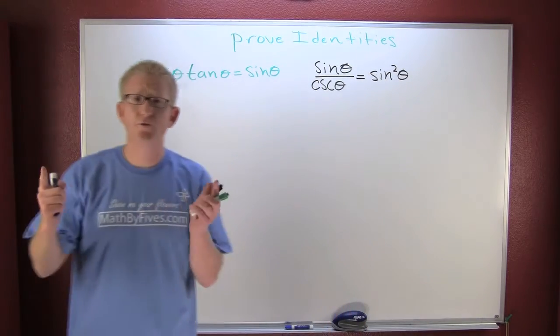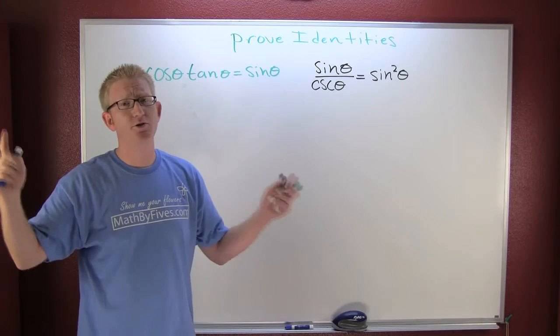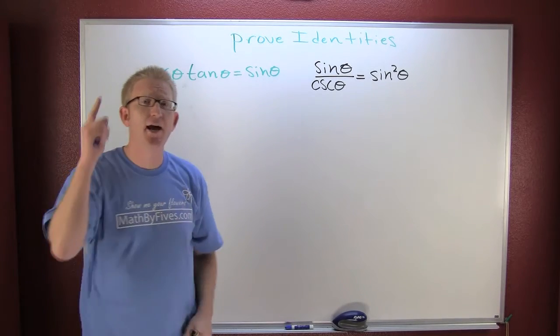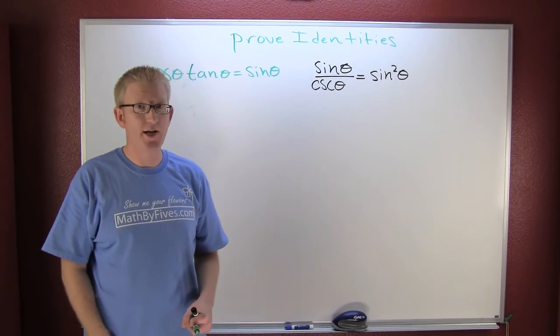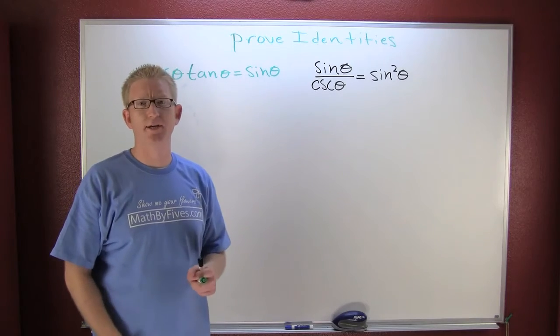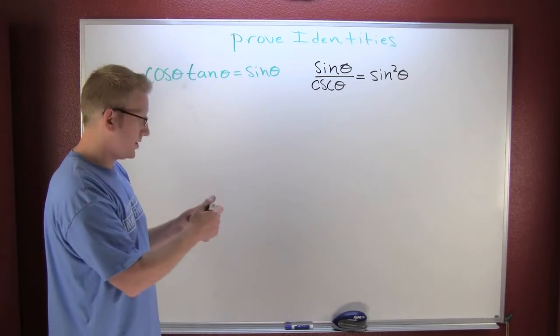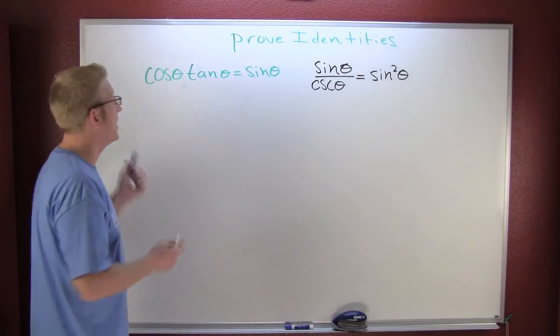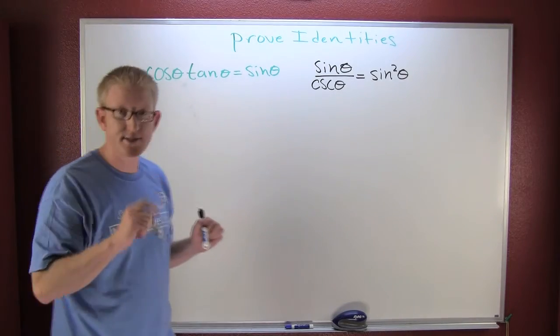If we're going to prove an identity, there's only one way I'm going to show you how to prove these identities, and that's starting on one side and through a chain of equalities end up on the other.